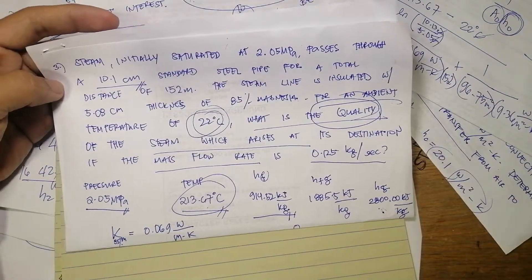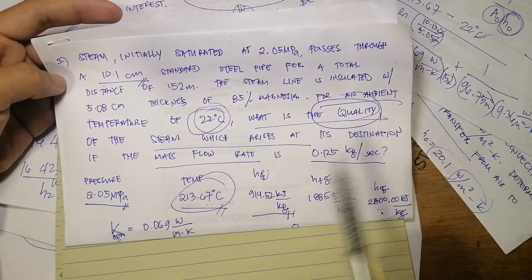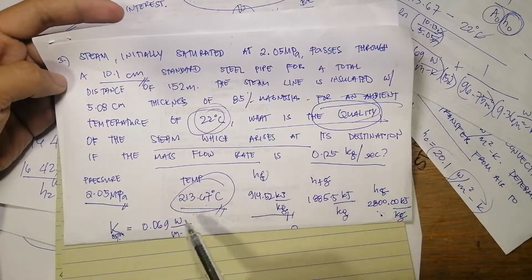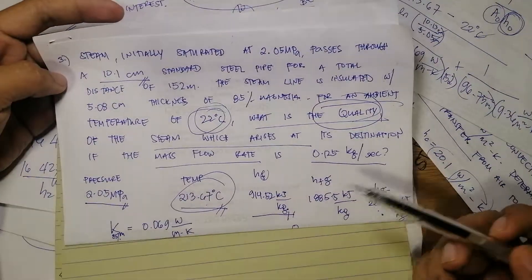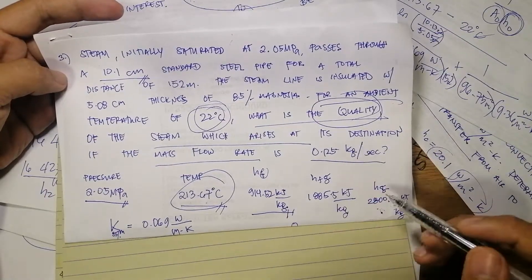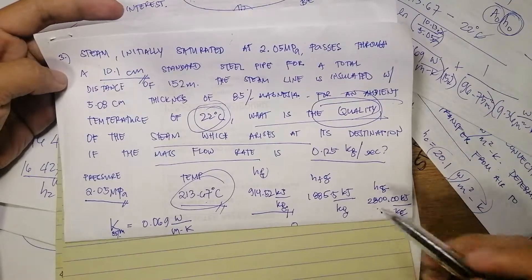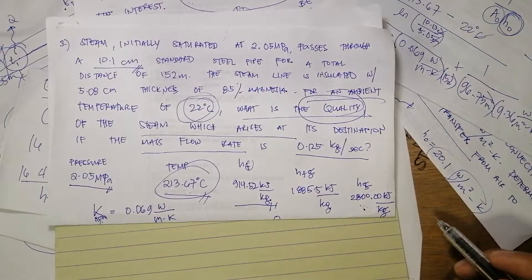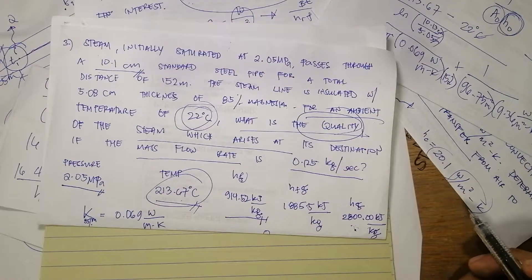The steam line is insulated with 5.08 centimeters thickness of 85% magnesium. For an ambient temperature of 22 degrees centigrade, what is the quality of the steam which arises at its destination if the mass flow rate is 0.125 kilogram per second? We have a table here where pressure at the saturated phase is 2.05 megapascals, 213.67 degrees centigrade temperature. The enthalpy HF is 914.52, enthalpy HFG is 1,885.5 kilojoule per kilogram, and HG is 2,800 kilojoule per kilogram.